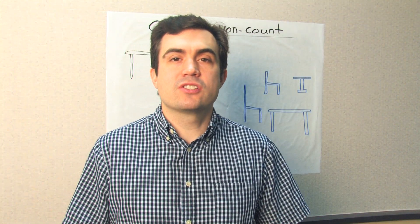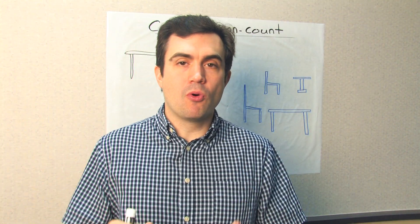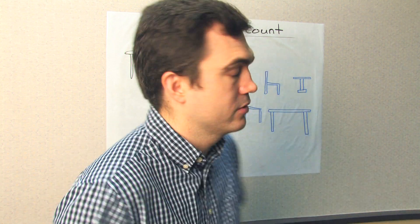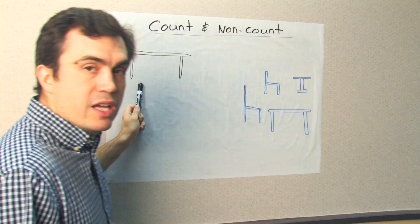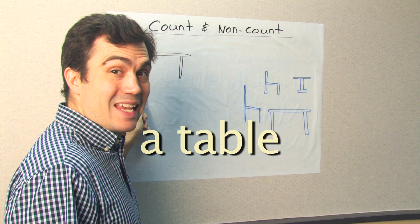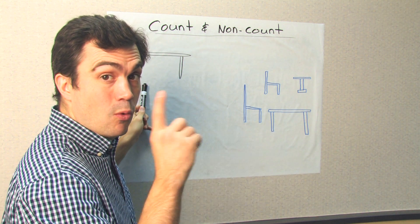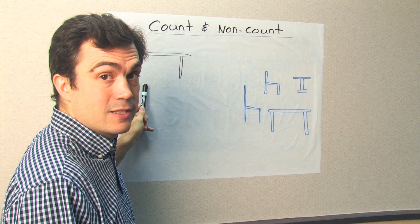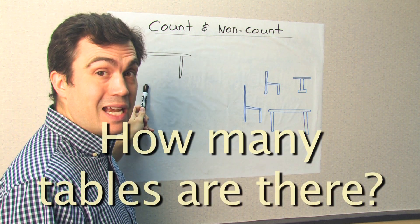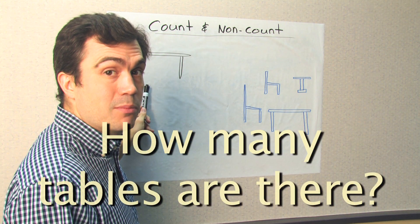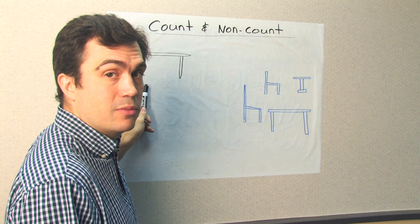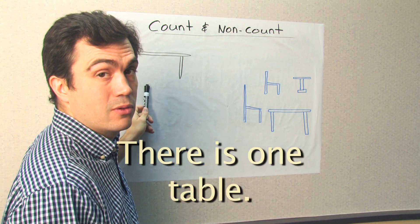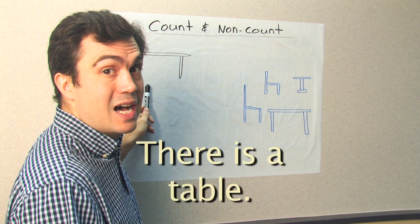Okay, so let's use more examples to talk about count and non-count. Here we have a table. A table. One table. Countable, right? How many tables are there? How many? Countable. There is one table. There is a table.